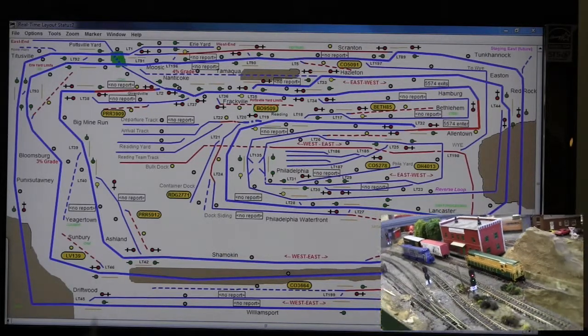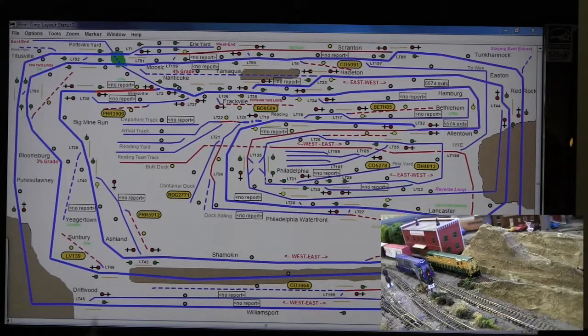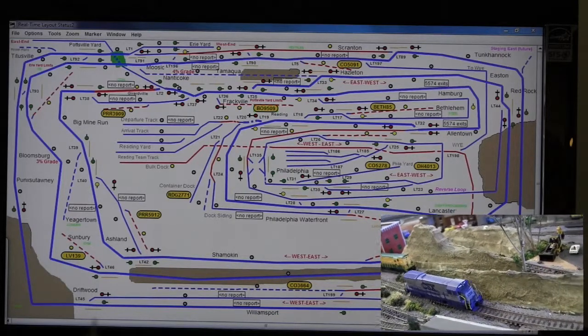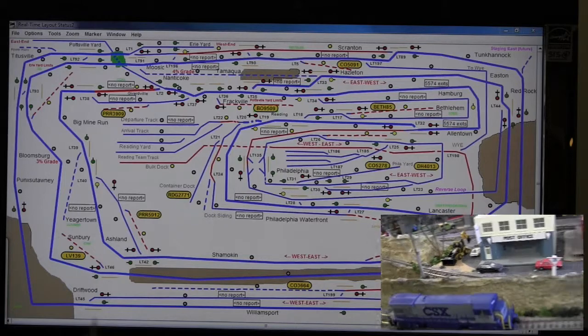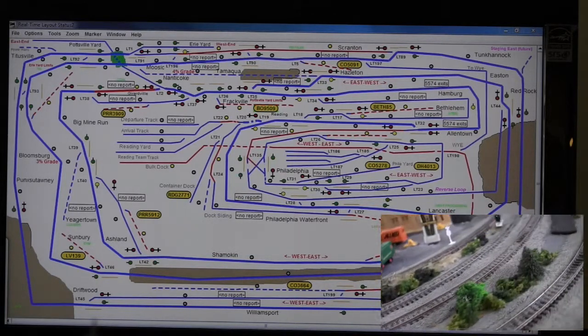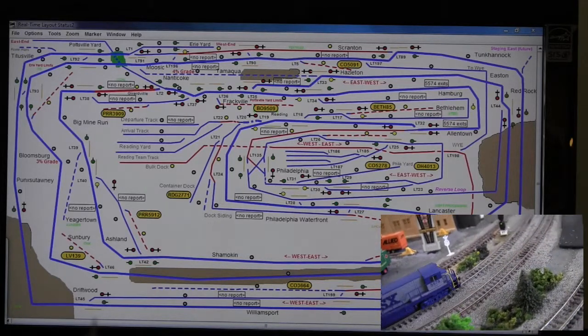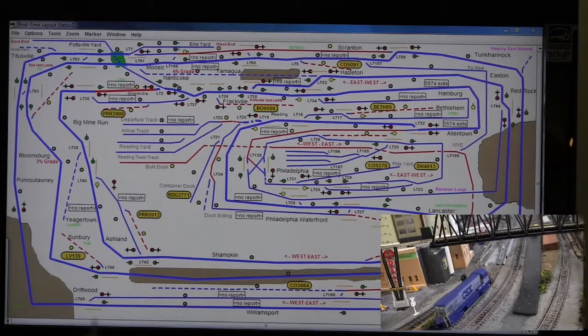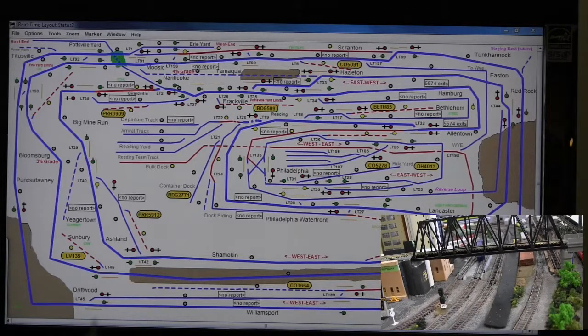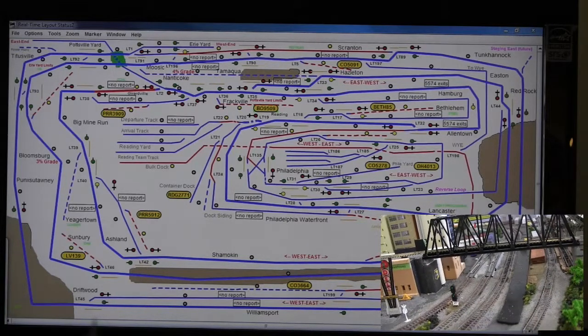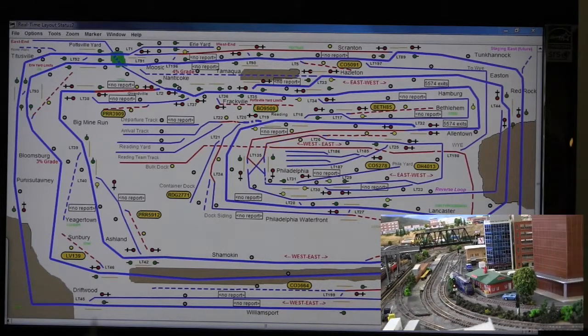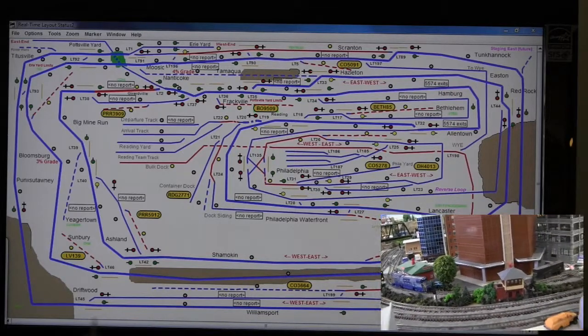We're going to bypass Reading on this test on the real-time system. We're going to go right from Allentown to Philadelphia. We've got to set the switches there.